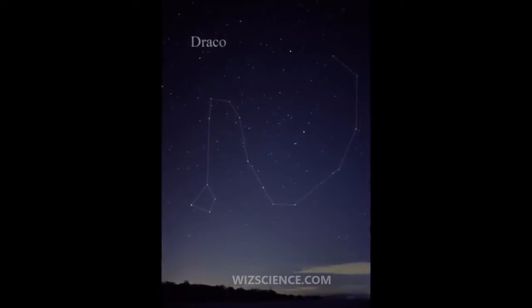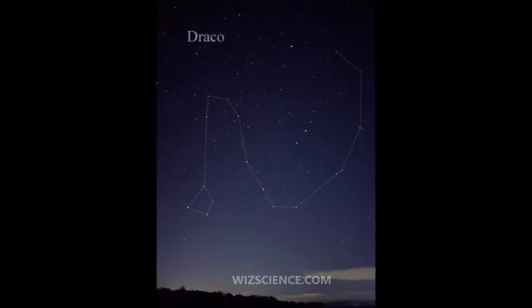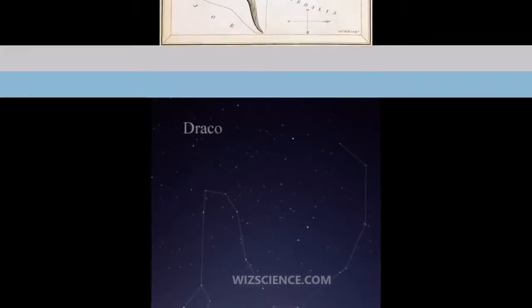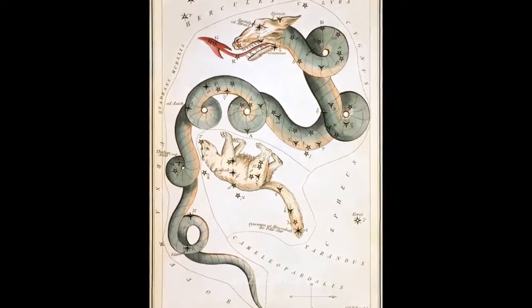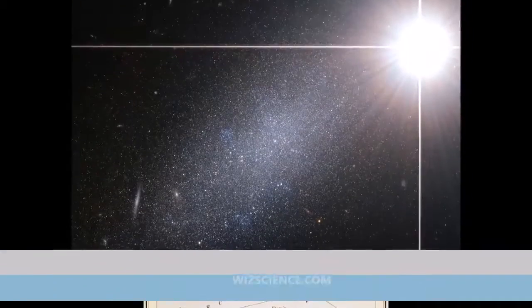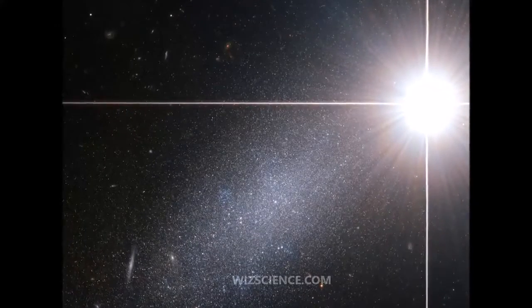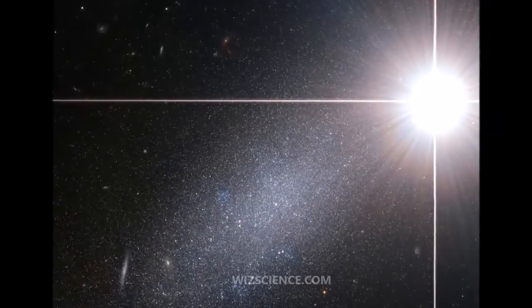Draco is home to several double stars and binary stars. Eta Draconis is a double star with a yellow-hued primary of magnitude 2.8 and a white-hued secondary of magnitude 8.2 located south of the primary. The two are separated by 4.8 arc seconds.